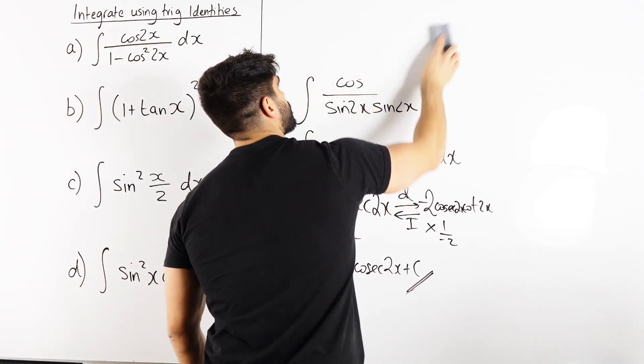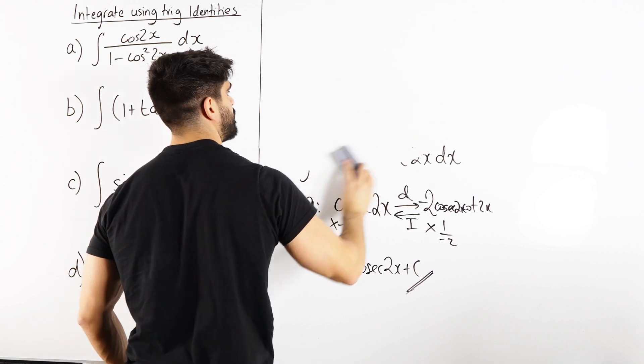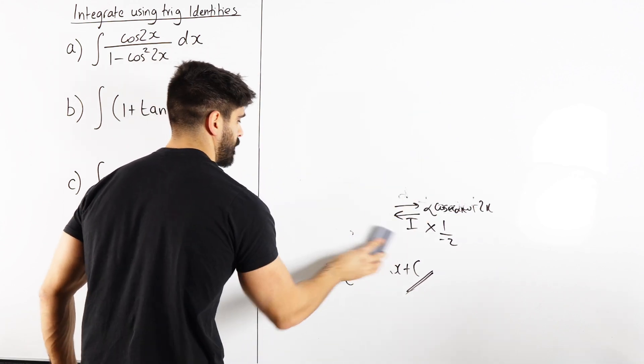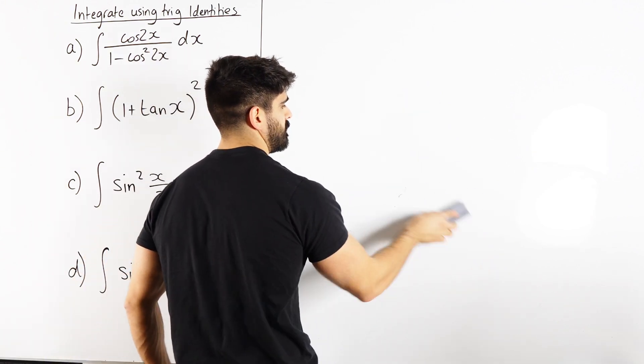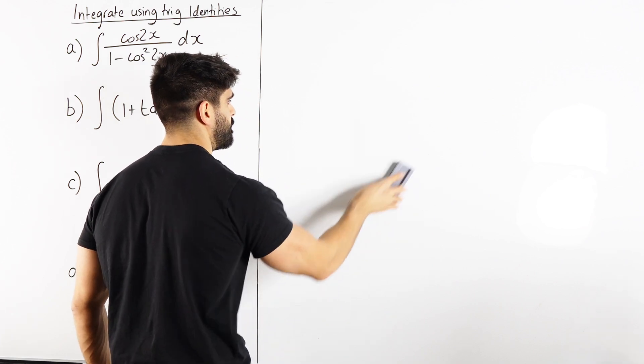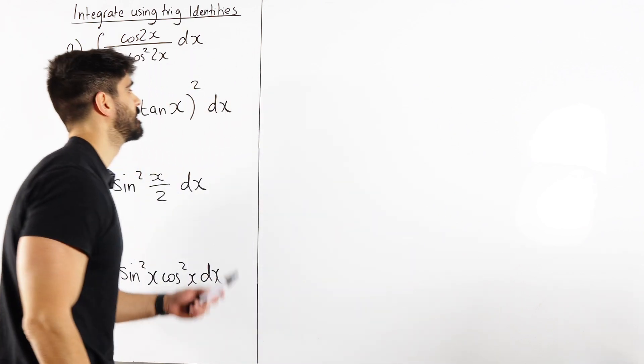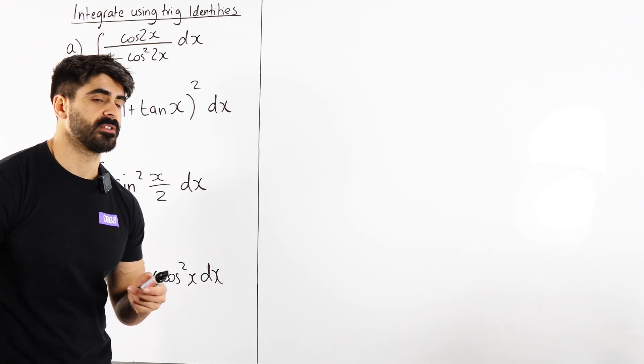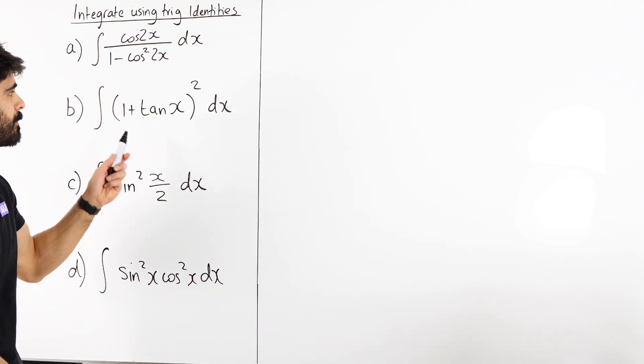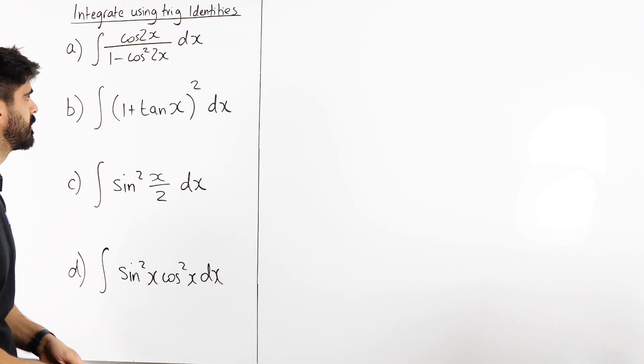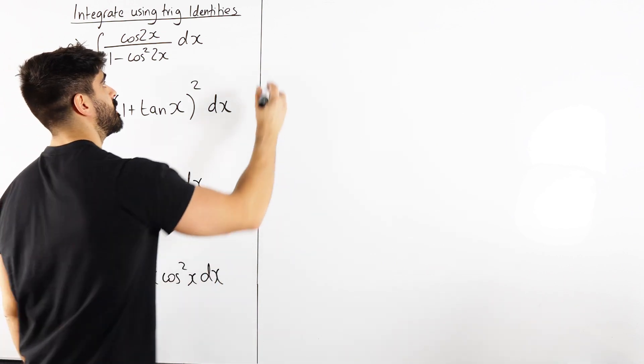Part B should be reasonably obvious what we need to do first. Now, a very common mistake that students make here is they look at this as 1 plus tan squared. But it's not 1 plus tan squared, it's 1 plus tan, all squared. So we're going to expand the bracket first.